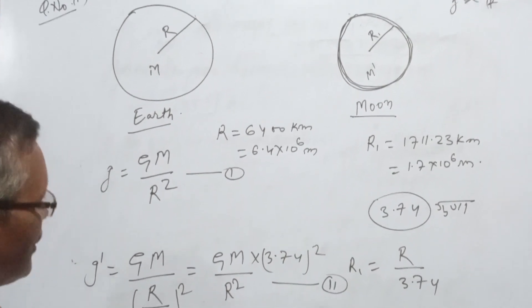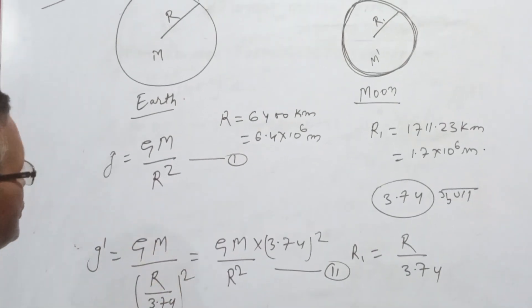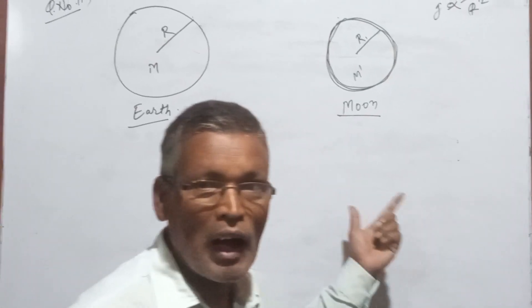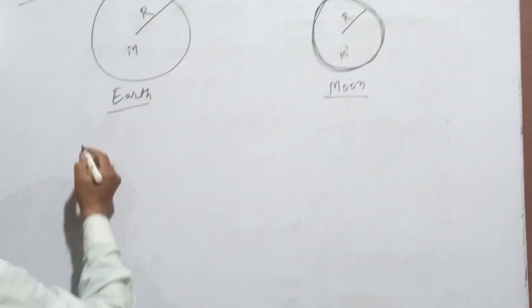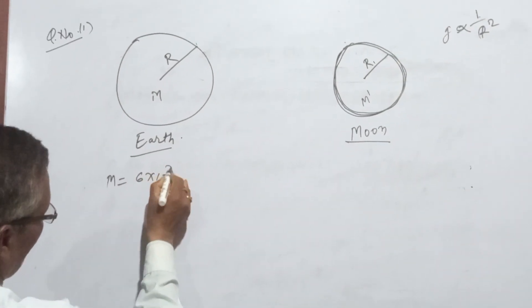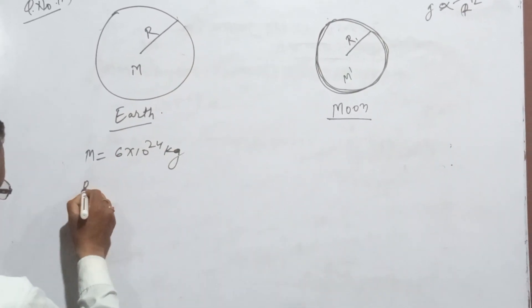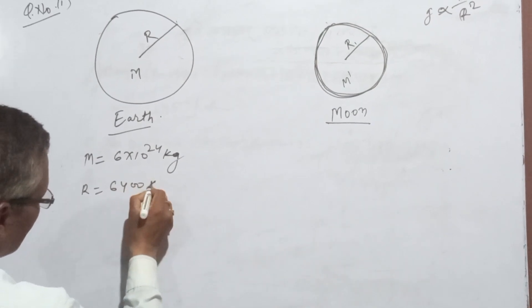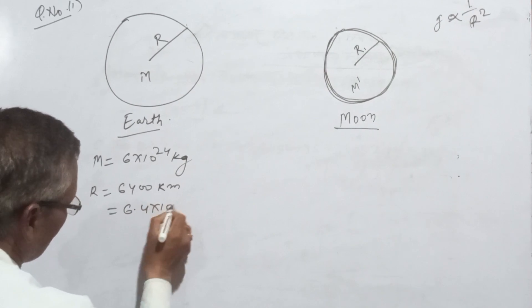Now the physical mass of Earth is 6 into 10 to the power of 24 kg, and the radius R is 6,400 km, which is 6.4 into 10 to the power of 6 meters.